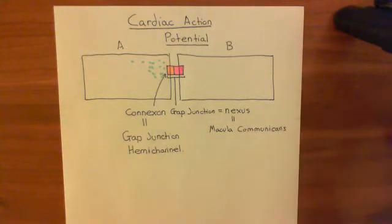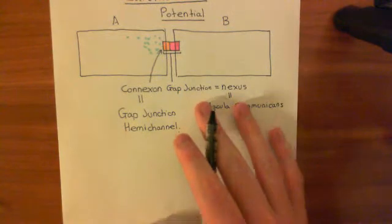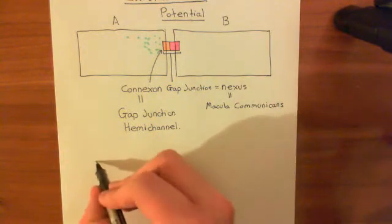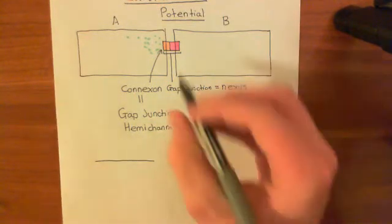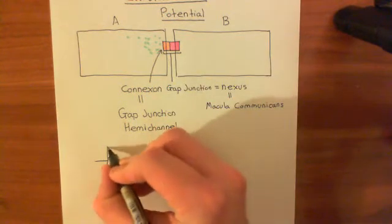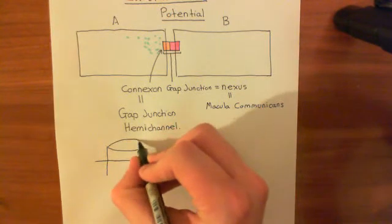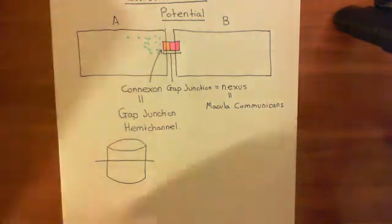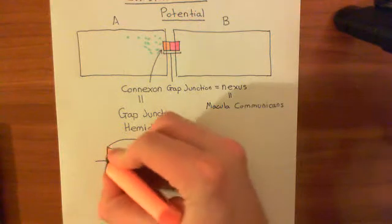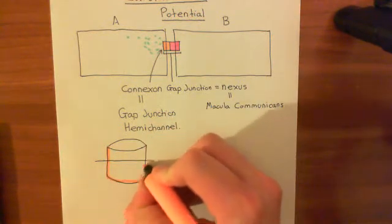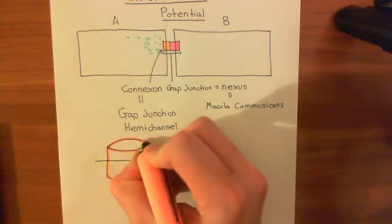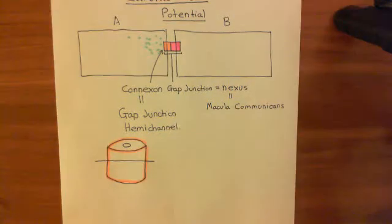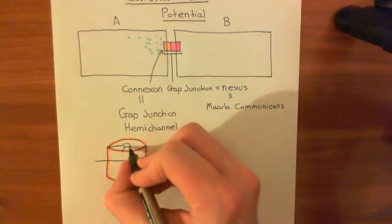Now let's go into the structure of these connexons in a bit more detail. If we draw out a single connexon — not the dimer of connexons, not the gap junction — let's say we have the cell membrane of cardiomyocyte A here with this connexon in it. These connexons are a channel, so they have a nice pore going through them, and they are a hexamer, so they're made up of six pieces.